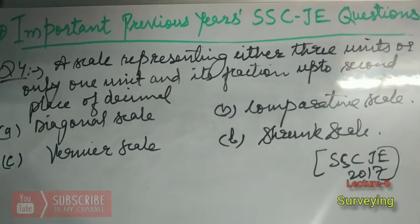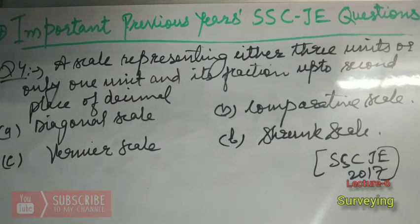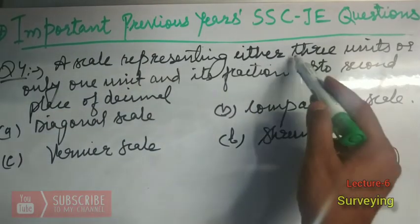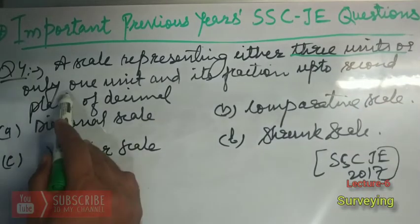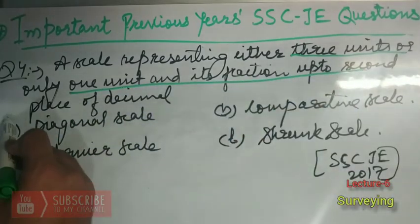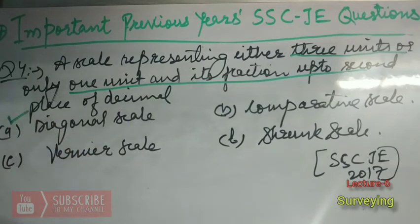We have discussed three types of scales: plain scale, diagonal scale, chord scale, and also a plain scale variant. We have learned that the diagonal scale gives more accurate and more precise results. So a scale representing either three units or only one unit with its fraction up to the second place of decimal is the diagonal scale.